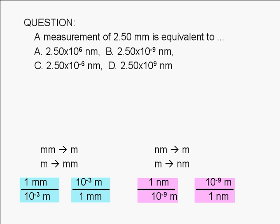The question is asking us to convert millimeters to nanometers, and none of the conversion factors we have here allows us to do that directly. However, it should be easy to see that we can accomplish the conversion by first converting millimeters to meters, then converting the result, which is in meters, to nanometers.